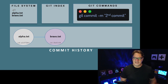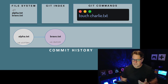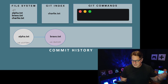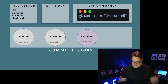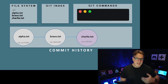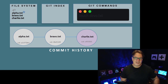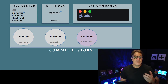You can keep doing this — create a file called charlie with touch charlie.txt, then do git add charlie.txt, then git commit -m 'third commit'. By the way, you don't always have to specify the file name. You can do git add dot, which means add all of the files that have changed to the git index.